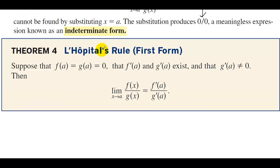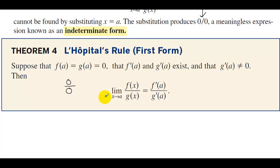Theorem 4, L'Hopital's Rule, first form. Suppose that f(a) equals g(a), and both of those are equal to 0 — so we plug a value into the function and get 0 over 0. That f'(a) and g'(a) exist, and that g'(a) does not equal 0. Then the limit of f over g is equal to the derivative of the top over the derivative of the bottom.